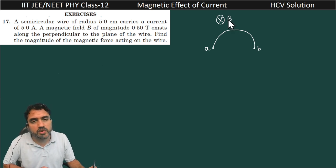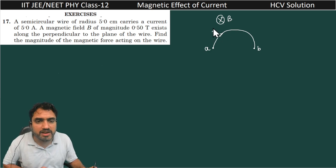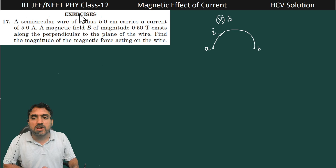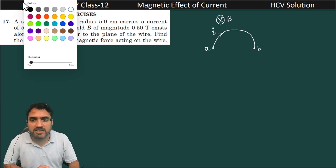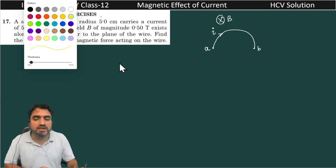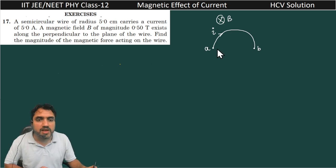In the last question we solved, the concept is that if you want to find the magnetic force on any kind of irregular shape, what you have to do is find the effective length, that is the shortest length between the endpoints of this wire.